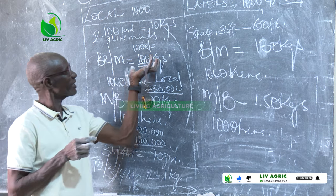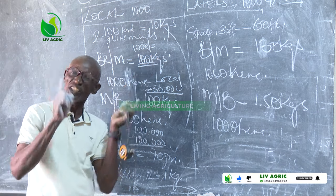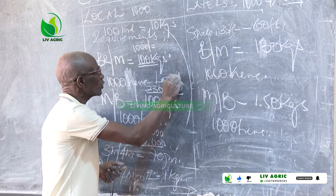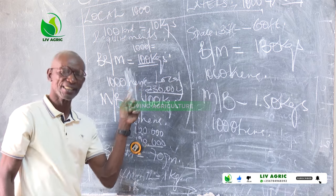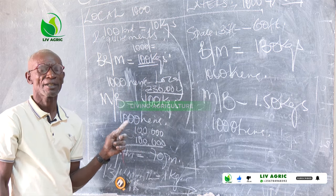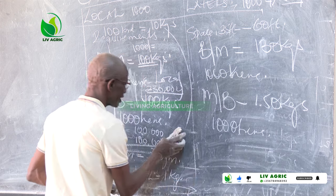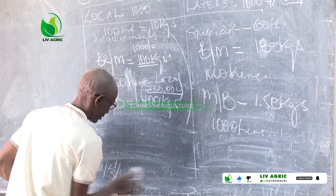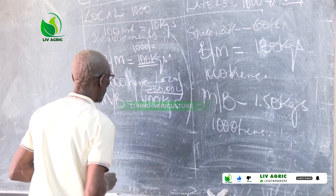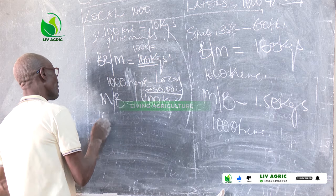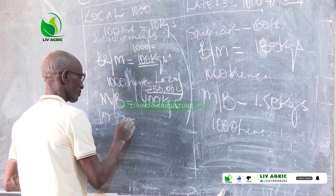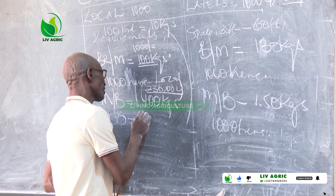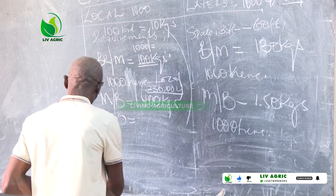100 kgs to feed 1,000 birds requires 230 kgs. Now let's be calculative still. With 1,000 local birds, let's take only 700 to be laying.